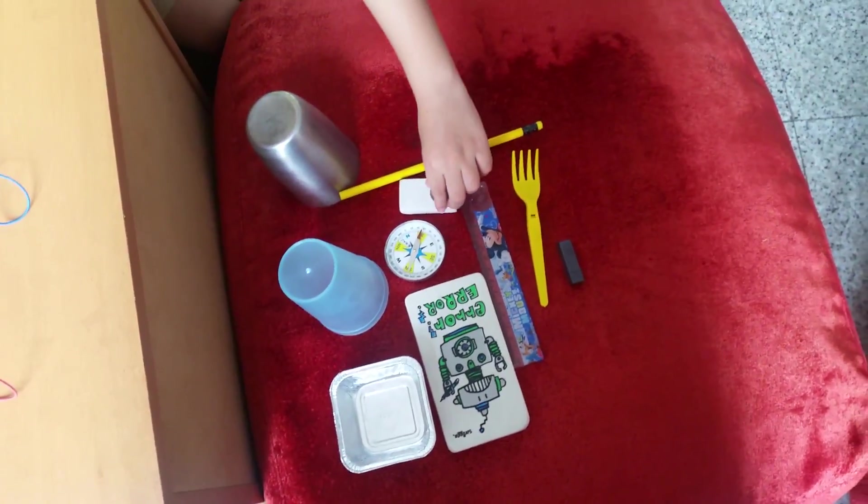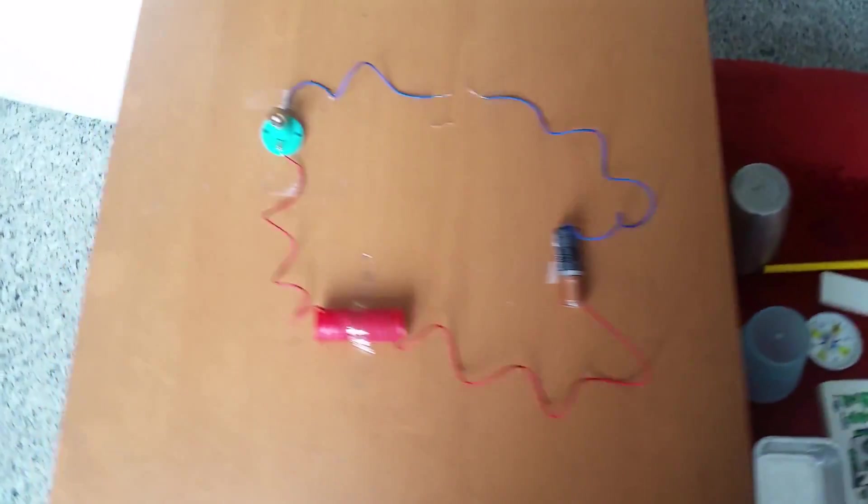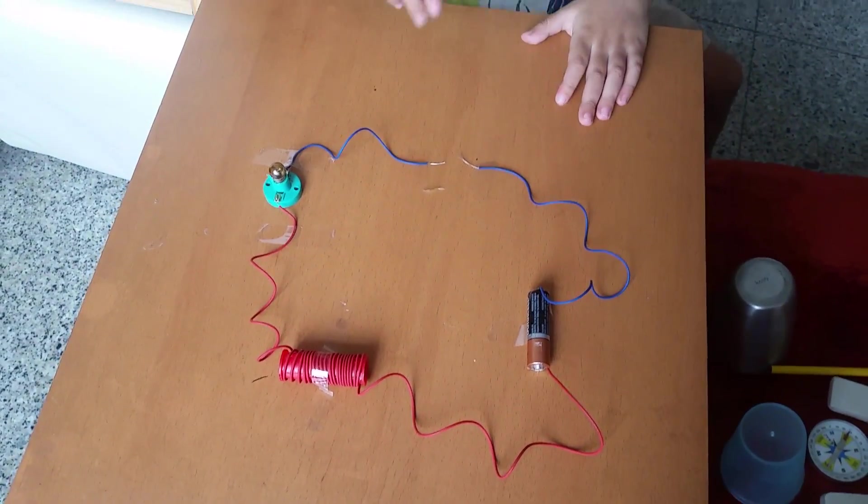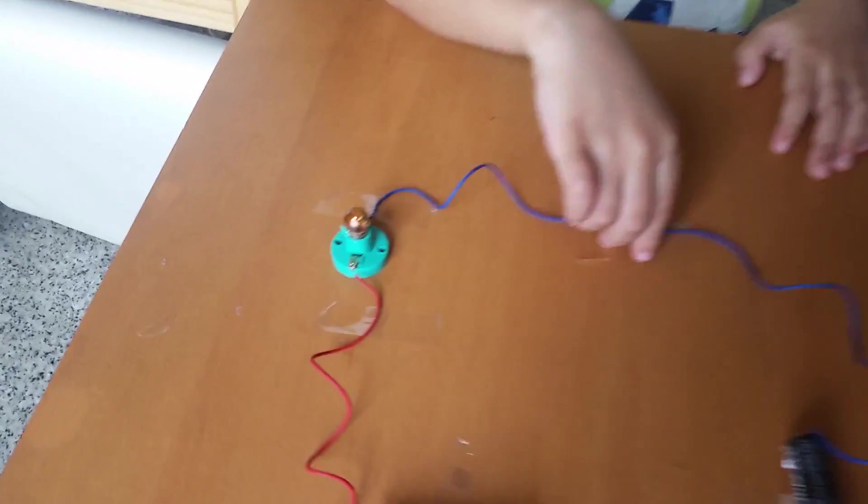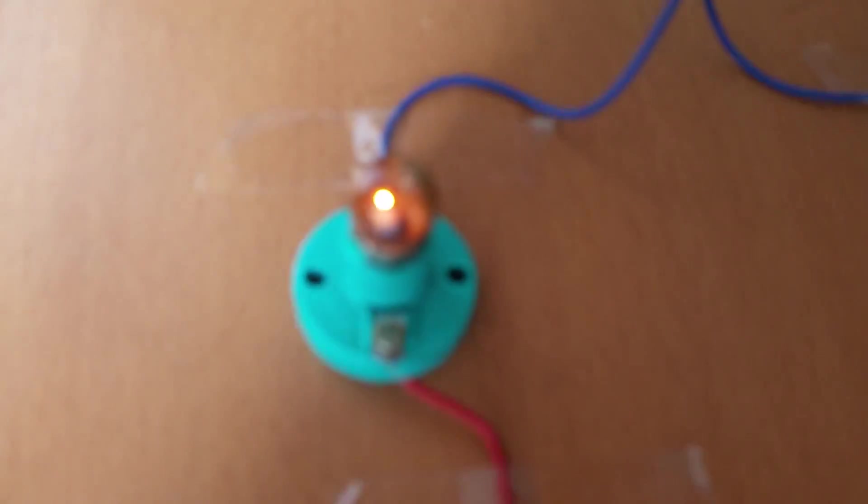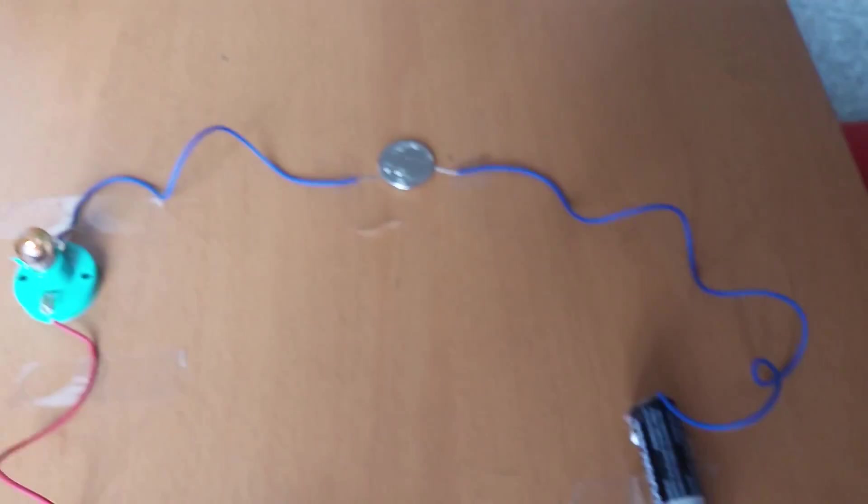So what do you want to pick first? I want to pick coins. Okay, and we will see whether coin is able to glow the bulb or not. It can. Look at that. So coin is a? Conductor.